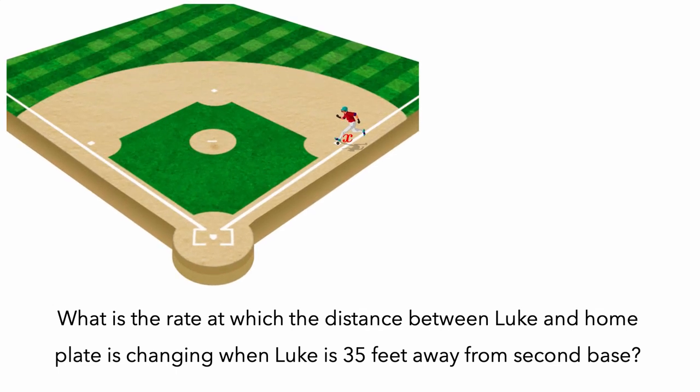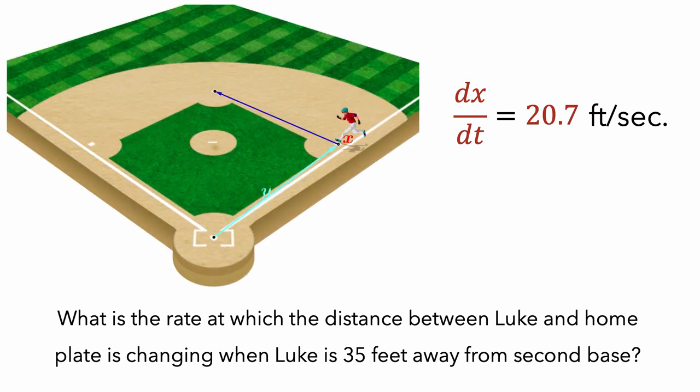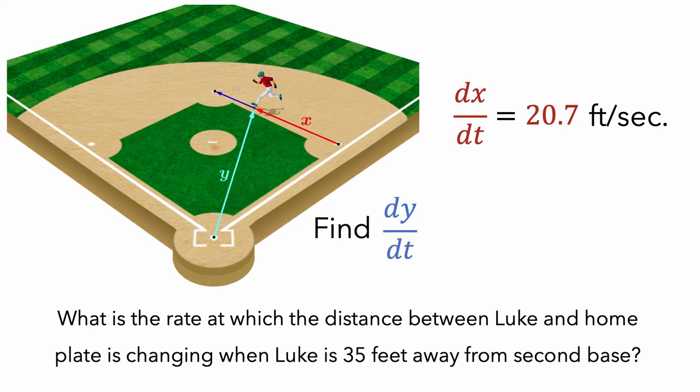Since Luke is running at a constant rate of 20.7 feet per second, and since x represents Luke's distance from first base in feet, then dx/dt equals 20.7 feet per second. So our task is to compute dy/dt when Luke is 35 feet away from second base. So this will happen when x is equal to 90 minus 35 feet or 55 feet.